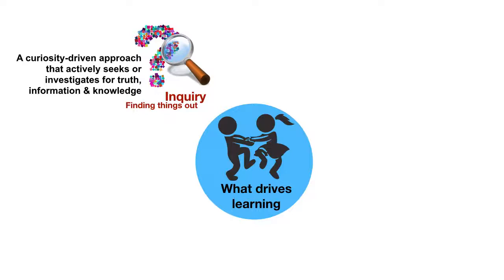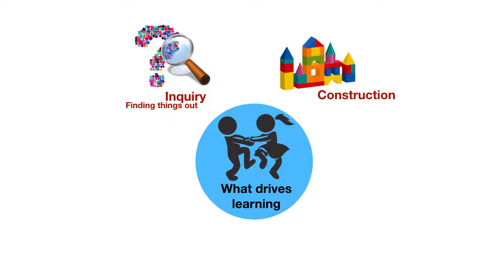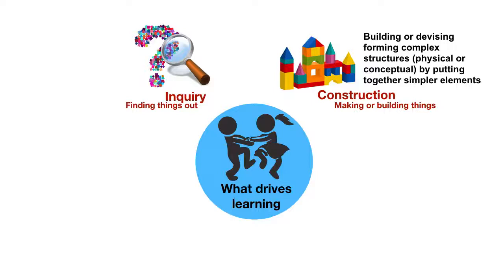This is typically what we do whenever we want to find the answer to some question. The second thing Dewey talks about is the idea of construction, which is nothing more than making or building things. This could be an actual physical object like a house, or something as abstract as a theory, a poem, a website, or an app — essentially building or devising complex structures, either physical or conceptual, by putting together simpler elements.